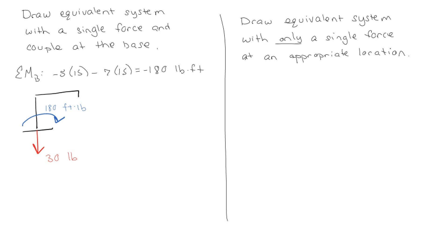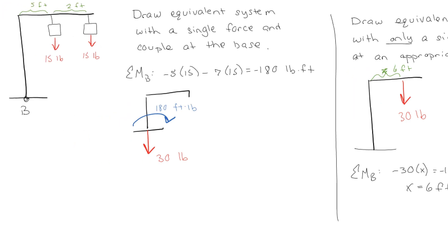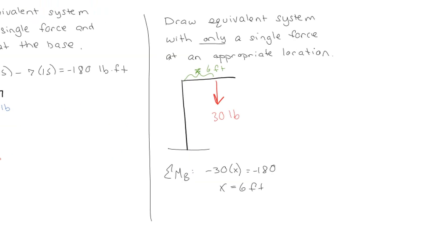Now if we actually want to draw the equivalent system with only a single force at the appropriate location, that 30-pound force has to be at just the right spot so that it creates that 180 foot-pound moment. The moment about B is given by negative 30x, and that needs to equal negative 180, so x equals 6 feet. So instead of a force and couple, I can just have the force located at the perfect spot — 6 feet out. You've got a situation where I can either have two forces and track all kinds of things, or draw it with everything at a single point, or place exactly one force at the absolute perfect location.